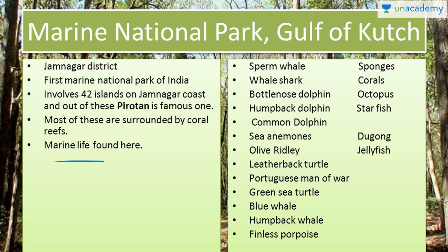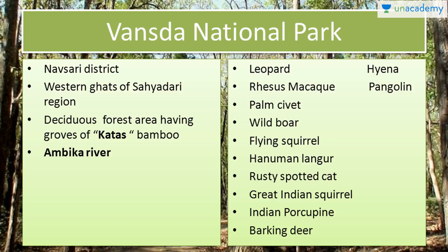Next we have Vansda National Park. It is in Navsari district and lies on the western Ghats of Sahyadri region. You will find here bamboo trees in large number, known locally as katas. The Ambika river flows through Vansda National Park. Animal species include leopard, rhesus macaque, palm civet, wild boar, flying squirrel, Hanuman langur, rusty spotted cat, great Indian squirrel, Indian porcupine, barking deer, hyena and pangolin.